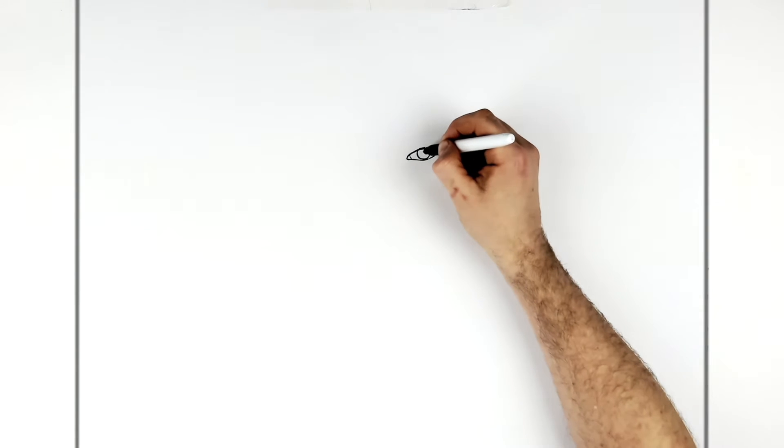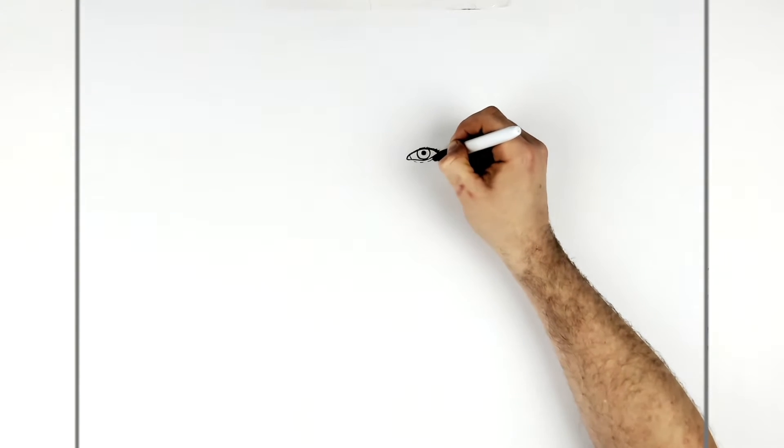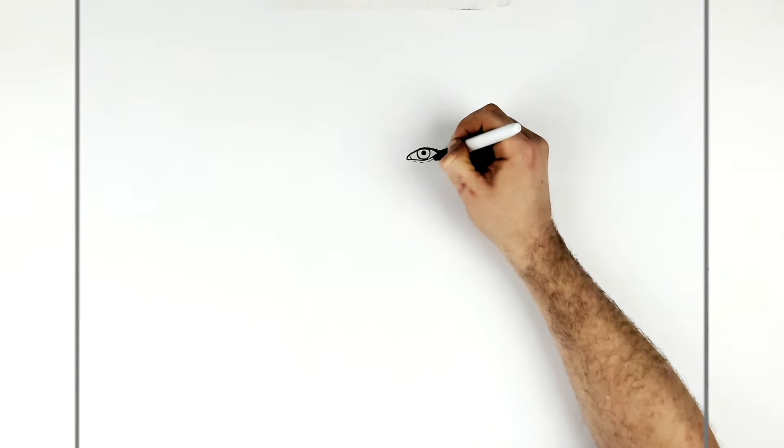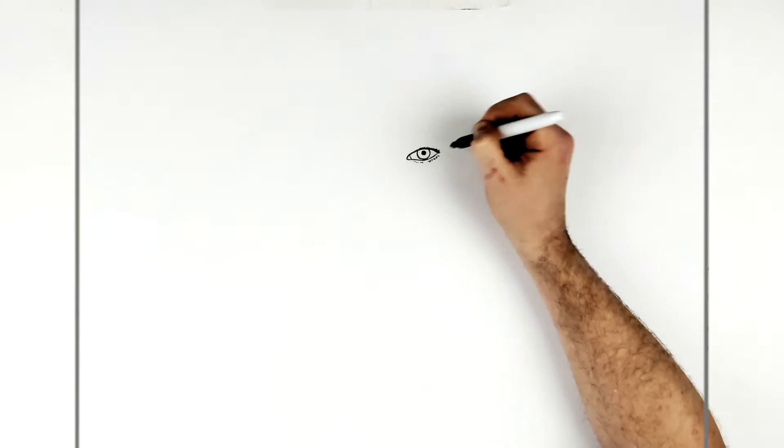And then pupil, just in the middle here, as middle as you can get it. Now he's got some eyelashes just on the bottom of his eye. So we've got like dots and dashes, tiny little eyelash lines just on the bottom of his eye there.